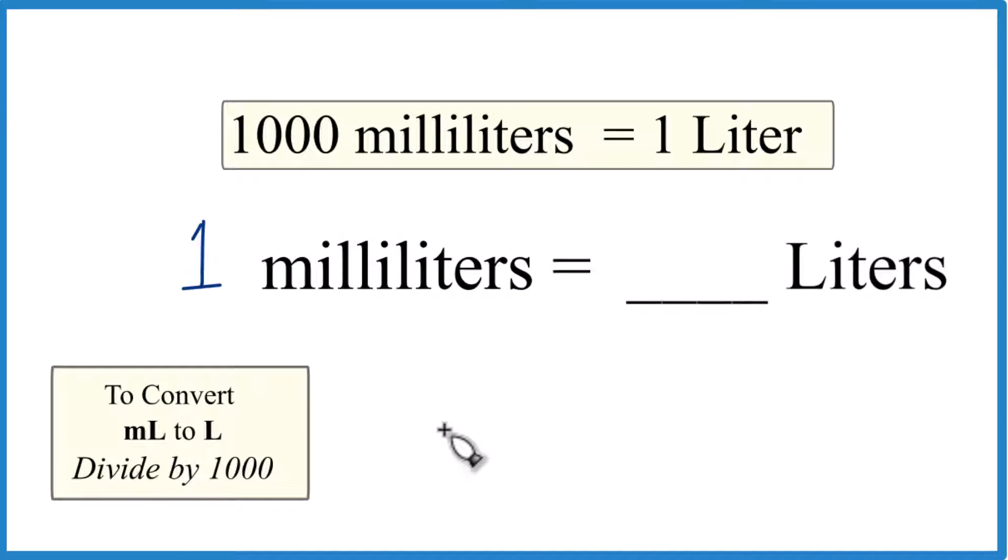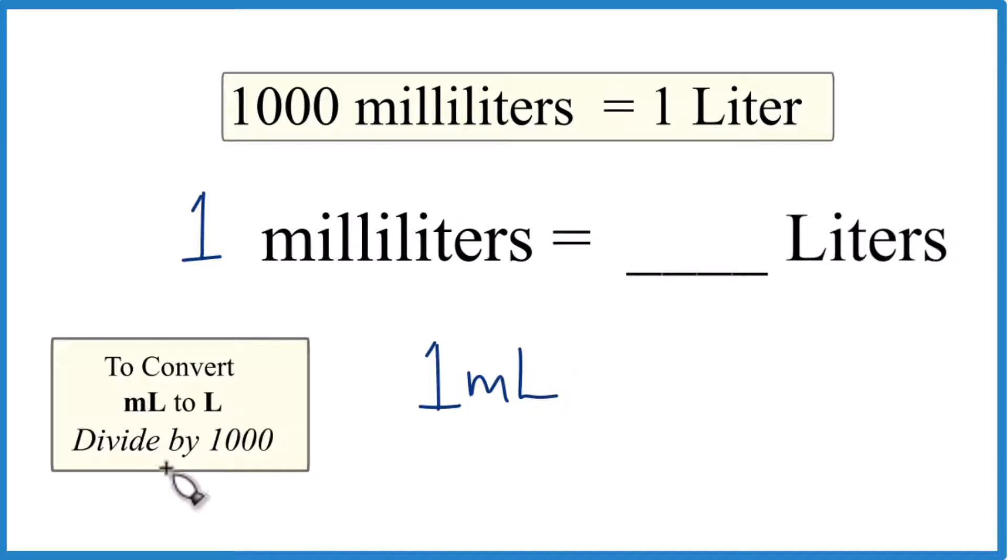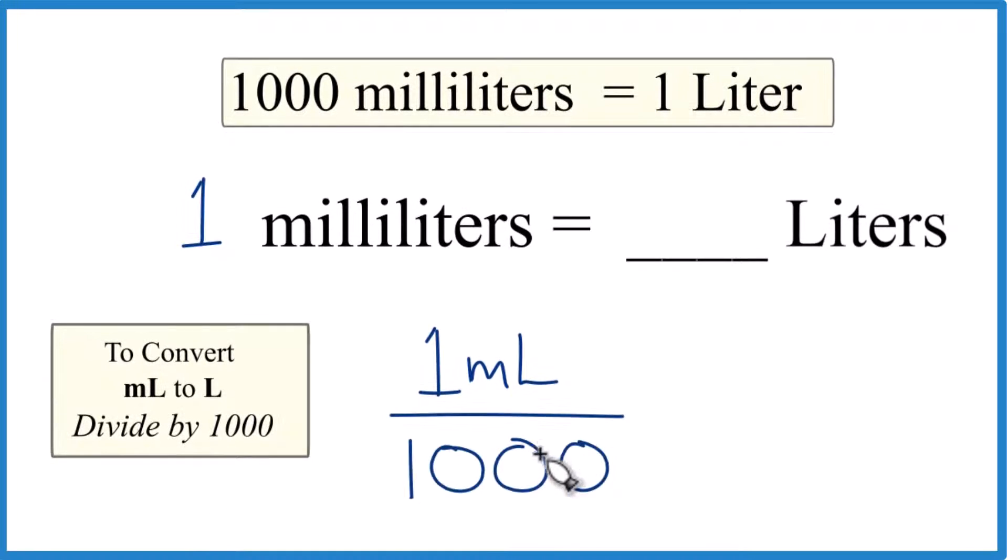So in this case, let's just work it out. We have our one milliliter, and then we divide that by one thousand. And that's one thousand milliliters per liter.